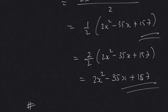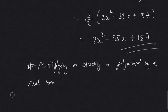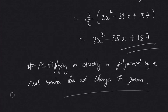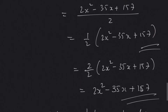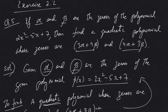So this will be our solution. As mentioned, multiplying or dividing a polynomial by a real number does not change its zeros — this note was given in the previous video. This is how we solve this particular problem. I hope you've learned; this will require a little bit of practice, so I believe you will practice.